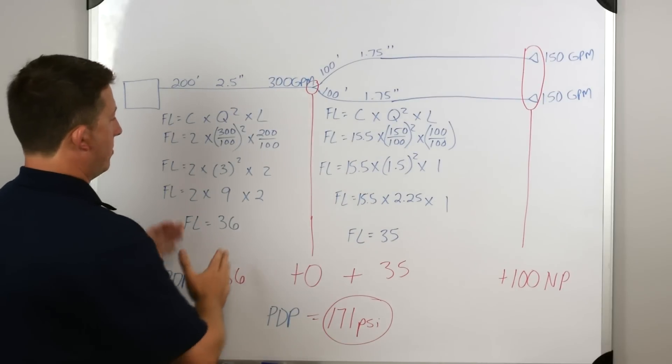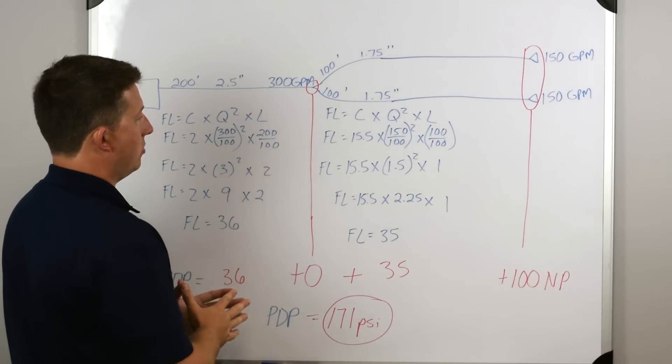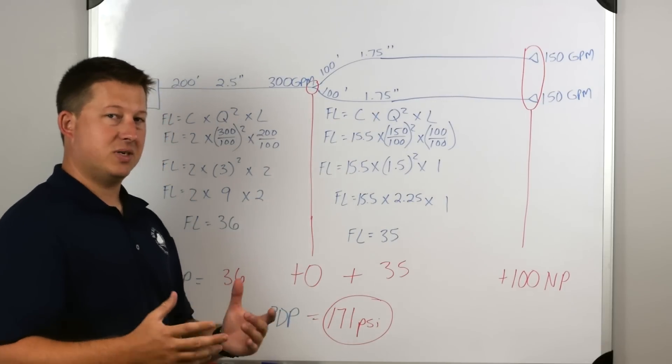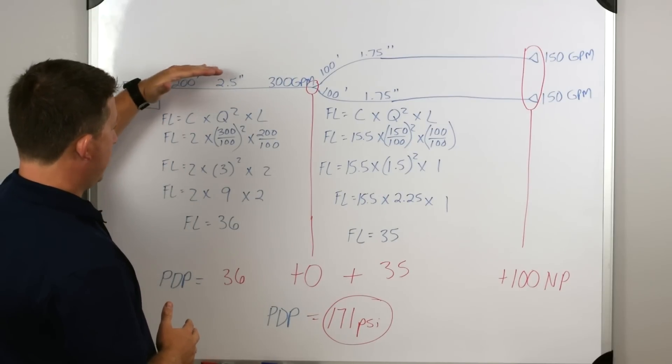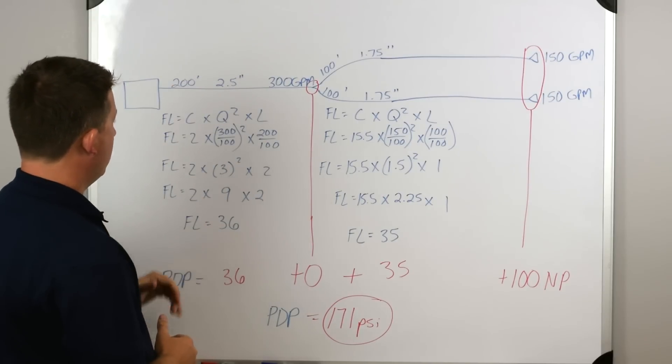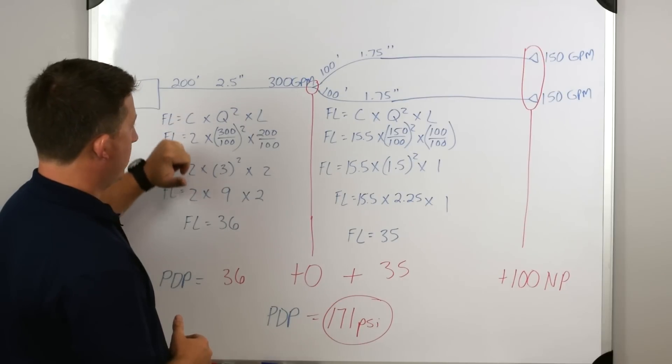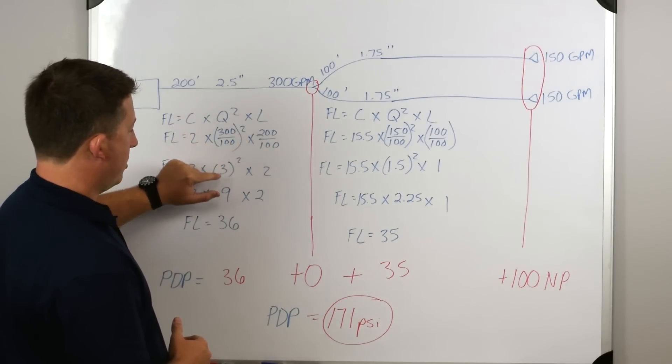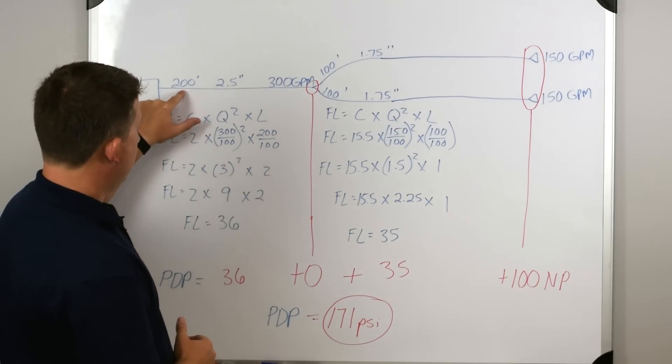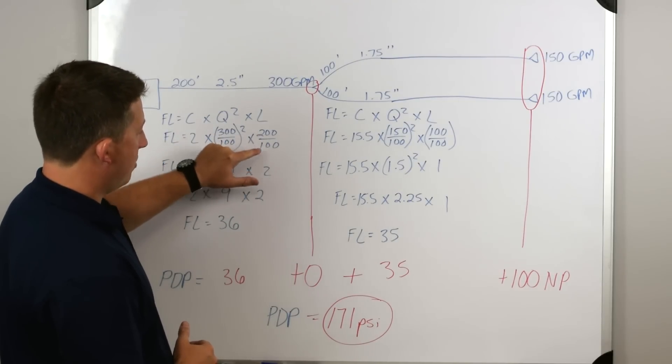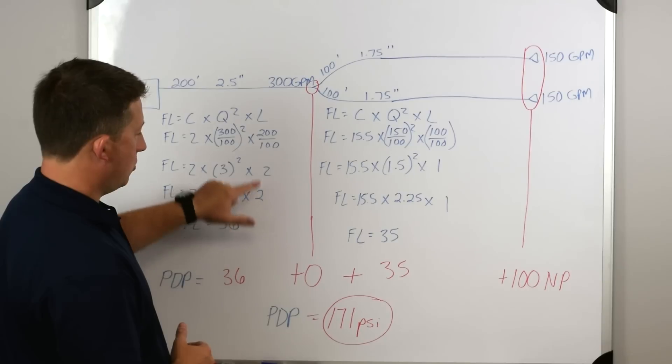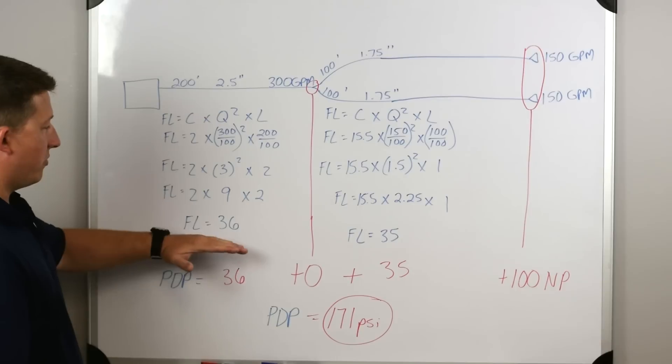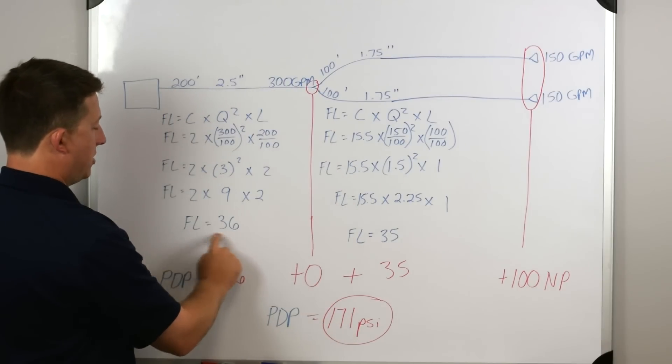So we work out this problem from left to right. That's the easiest way to do it, and to draw a diagram. I think that's a great way. Every time you draw a diagram, it eliminates you missing common mistakes. So first thing we do is work this one line. We'll work out our friction loss. The coefficient for the two and a half inch hose is two. We're flowing 300 gallons a minute, so that's 300 divided by 100 is three, and three squared is nine. The length of hose is 200 feet. 200 divided by 100 is two. We should have two times nine times two.